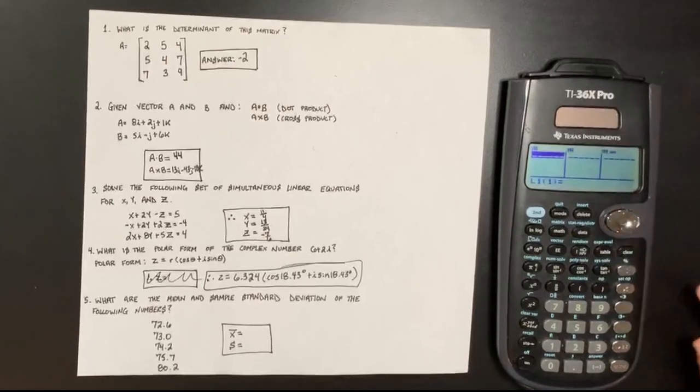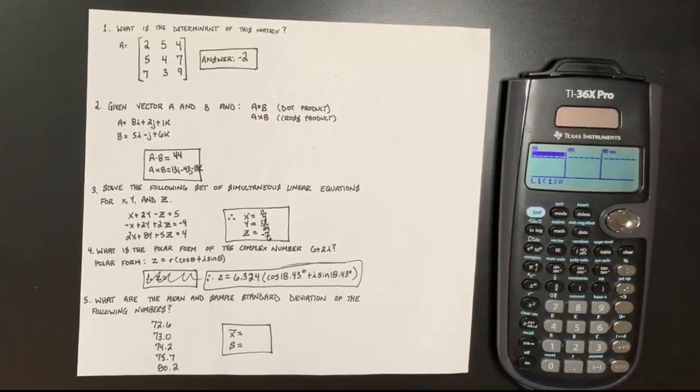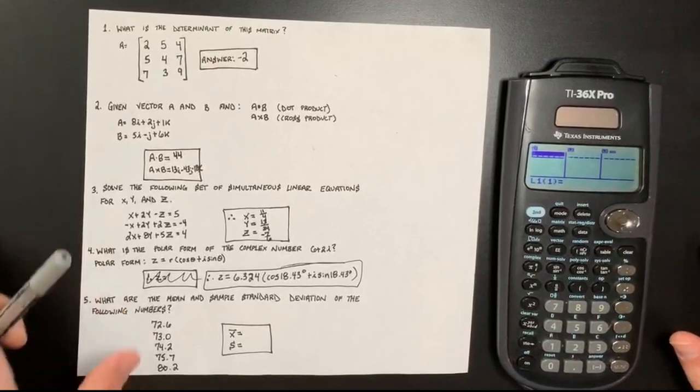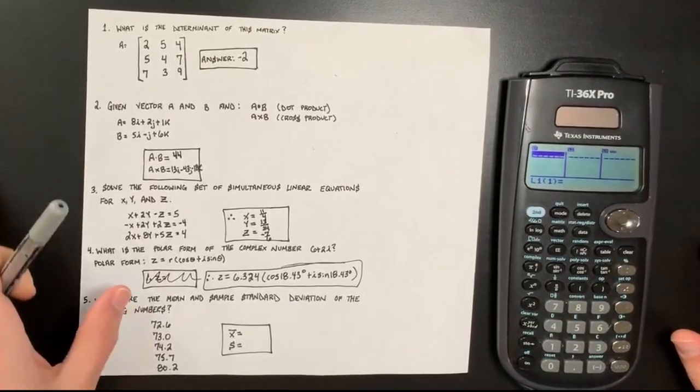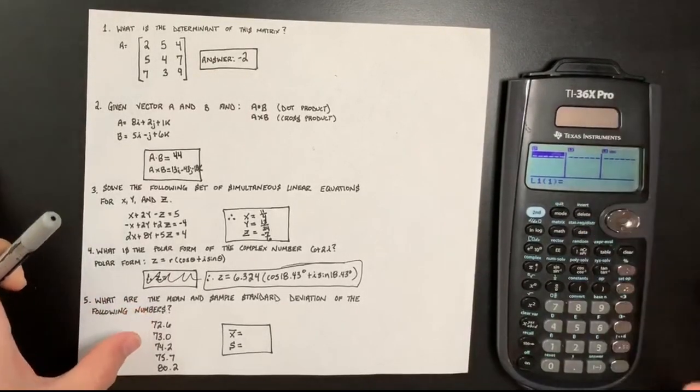So in order to solve a statistical question like this, you have to input the numbers just like you do with the matrices and the vectors. So to do that, you go to data and you're given three separate lists. So for a question like this, you only need one list. You only need to list the numbers in one list. So we'll do L1.